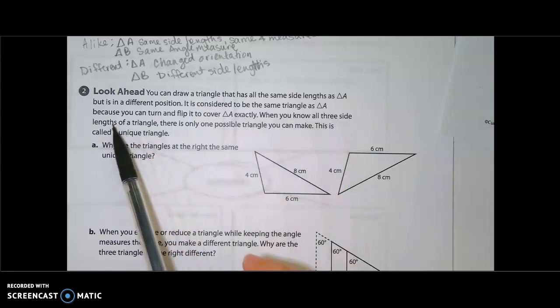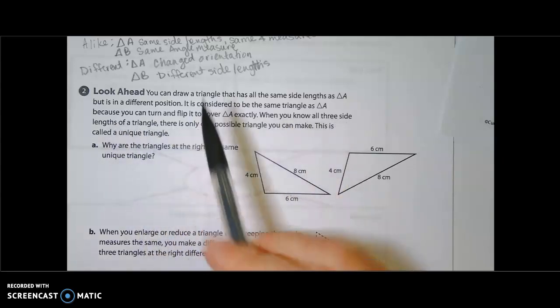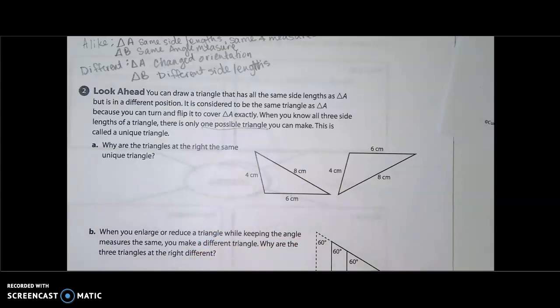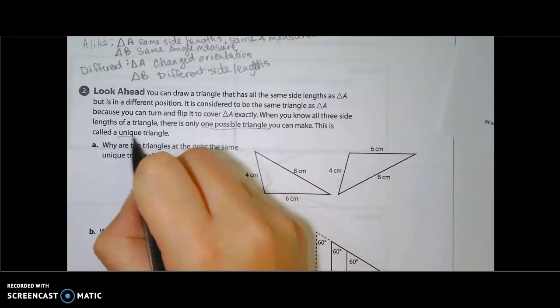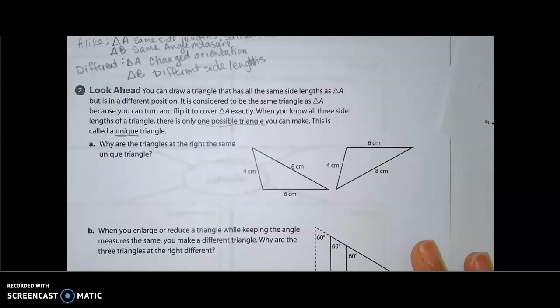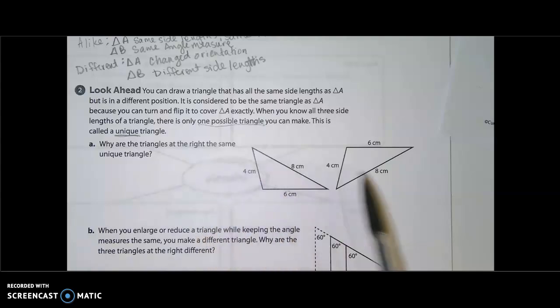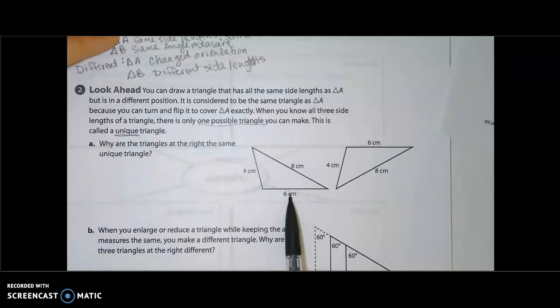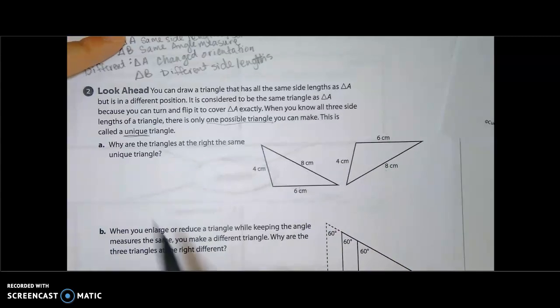When you know all three side lengths of a triangle, there is only one possible triangle you can make, and we call this a unique triangle. So then question A is asking, why are the triangles at the right the same unique triangle? And the reason is, just like it said up here, if we know all three side lengths, there is only one possible triangle, and we know all three side lengths, and they are all three the same.